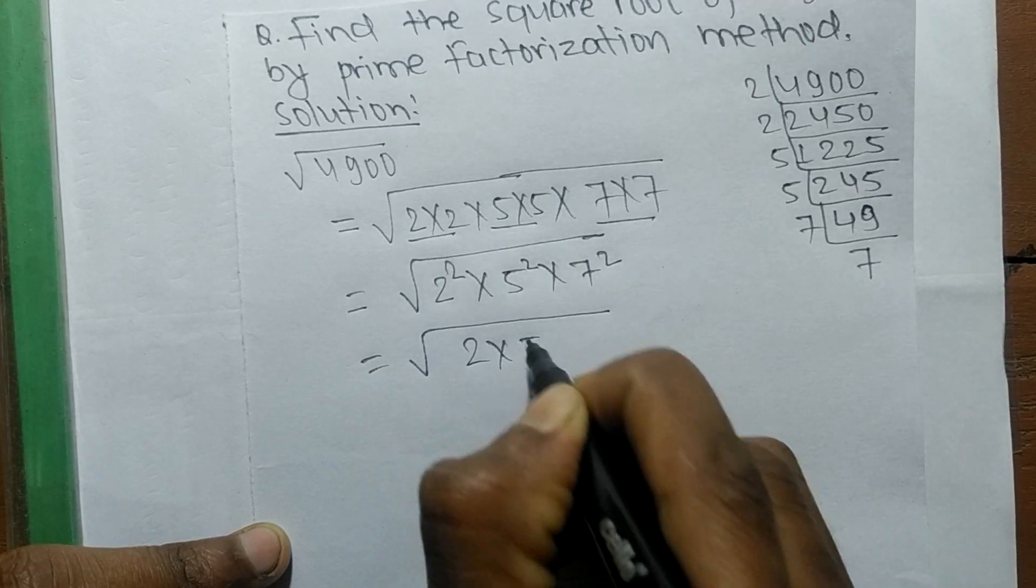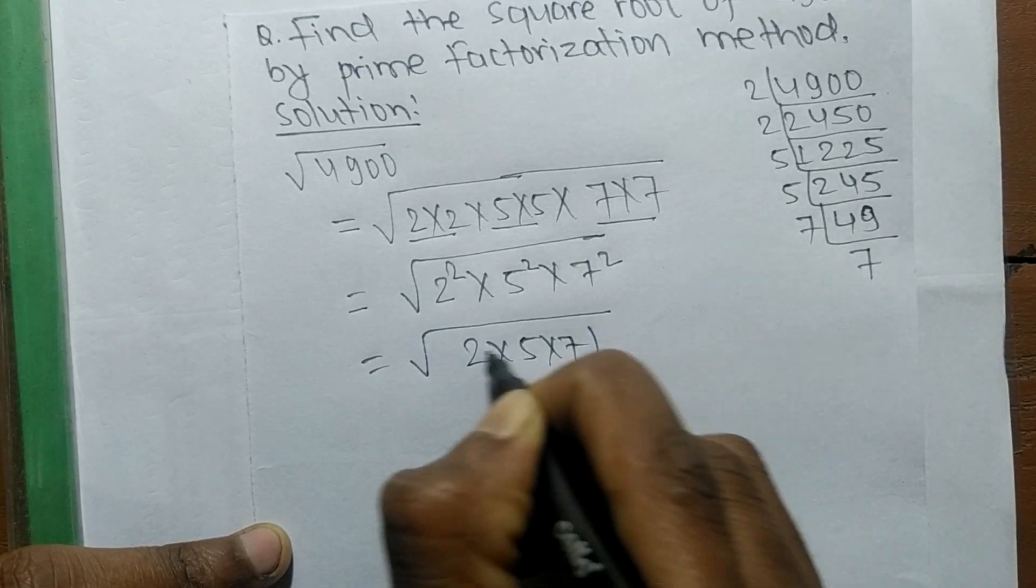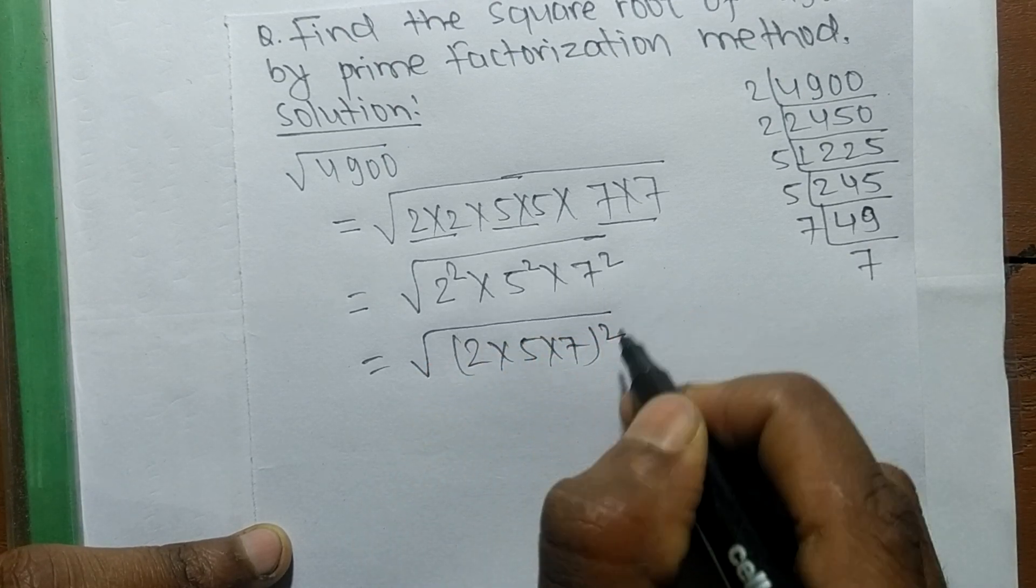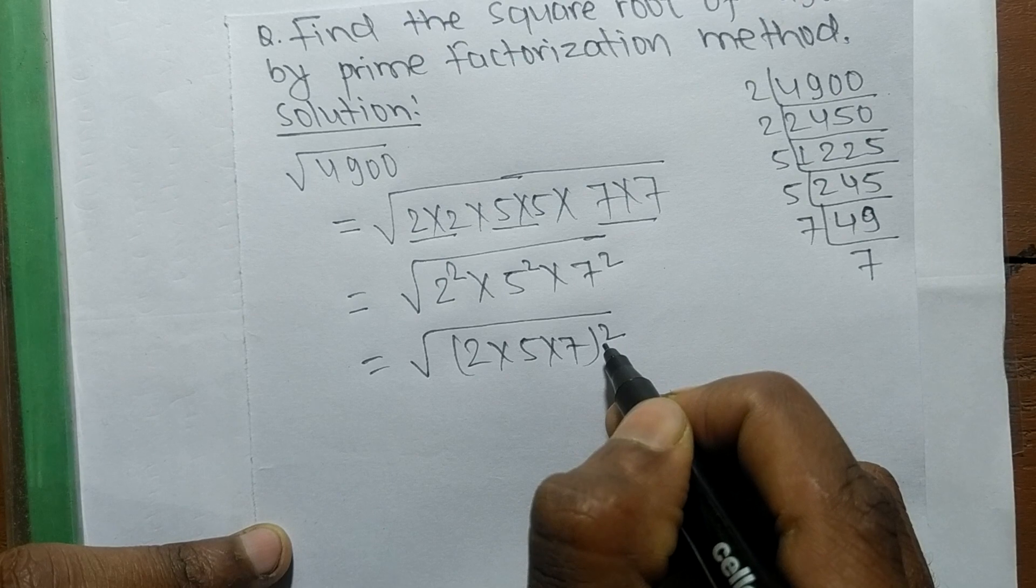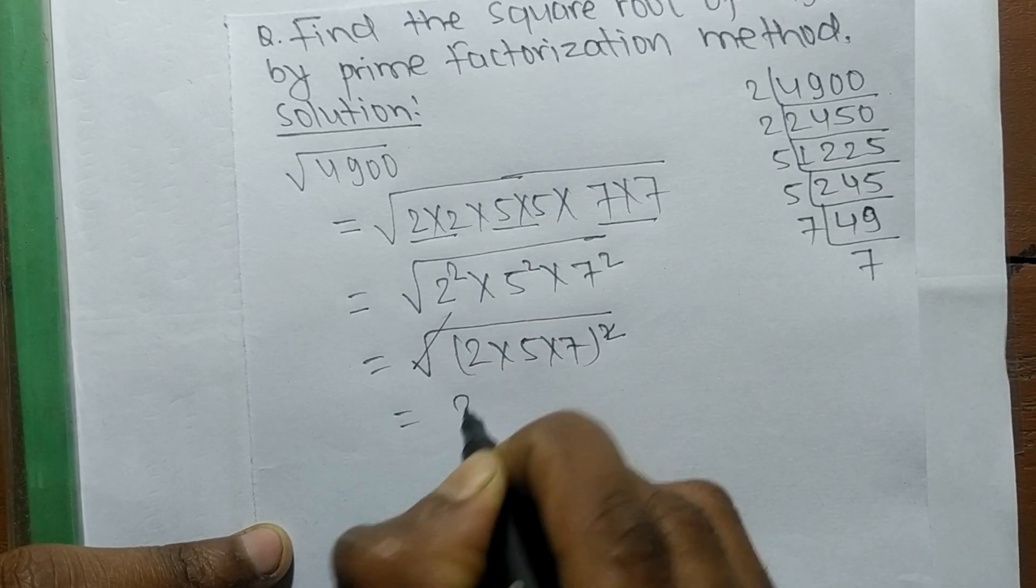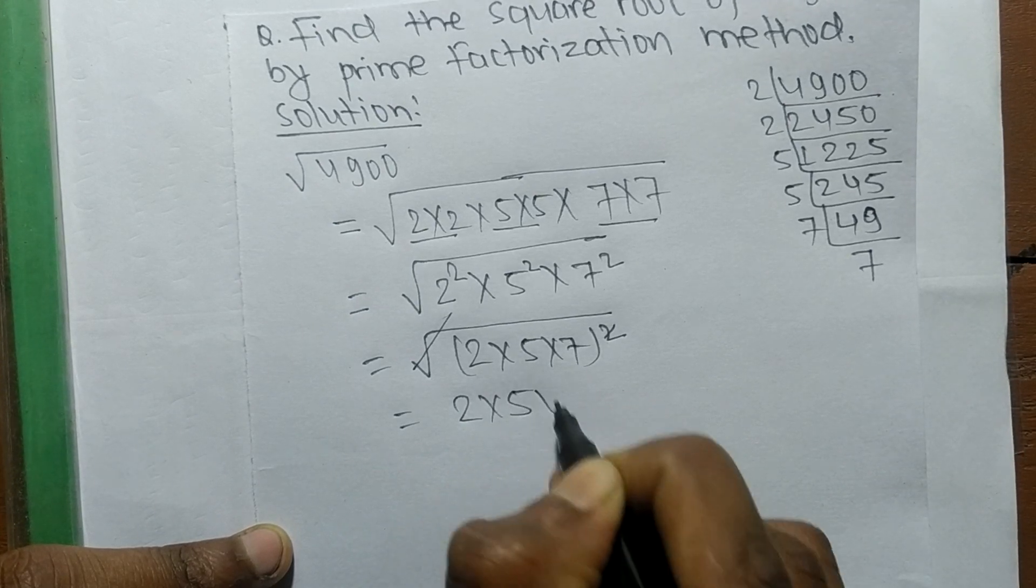All these numbers contain square, so we can write it as 2 into 5 into 7 whole square. Since square is present in all, we take the square as common. The square and square root cancel each other, so the remaining part is 2 into 5 into 7.